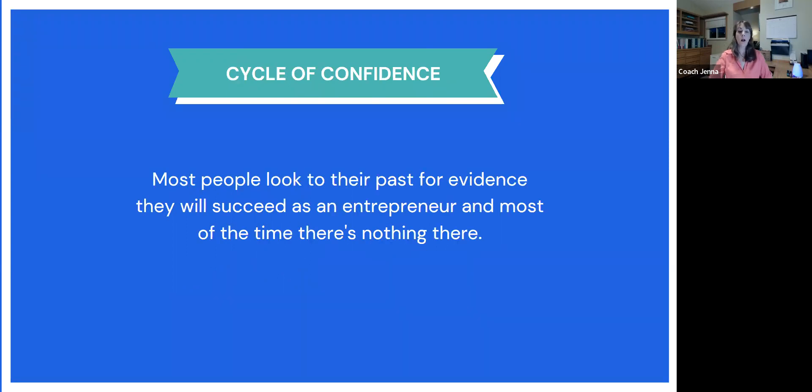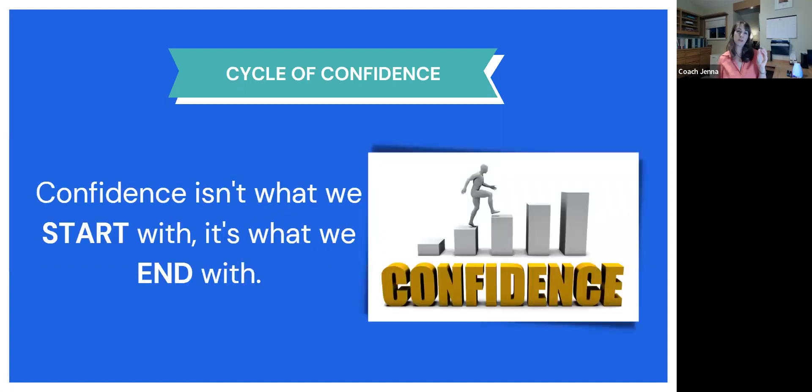So when you start something new, your brain is going to be looking for reasons why you can be successful. And so it's looking to the past for evidence of why you will be successful, either as an entrepreneur. And most of the time, there's nothing there. There's no evidence because this is something new. There's no evidence that you can be successful. There's no evidence that you can book a consultation or become a director or host a successful party, because these are all things you've never done before. There's just no evidence that you will be successful in business. So we kind of start to freak out right here, because we're relying strictly on our idea of something in the future. So one of the ways that you can get past this point right here is by remembering that confidence isn't what we start with. Confidence is what we end with.